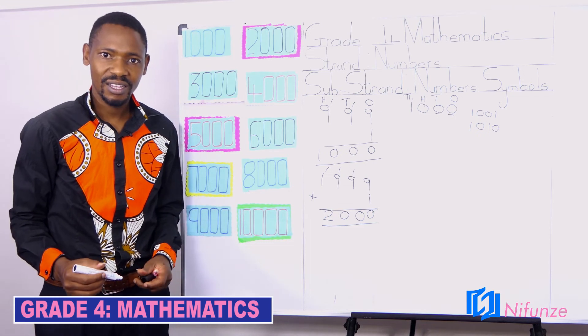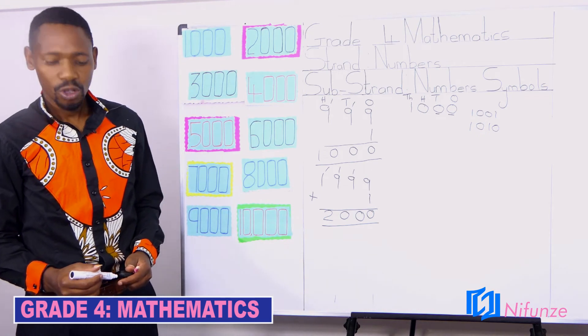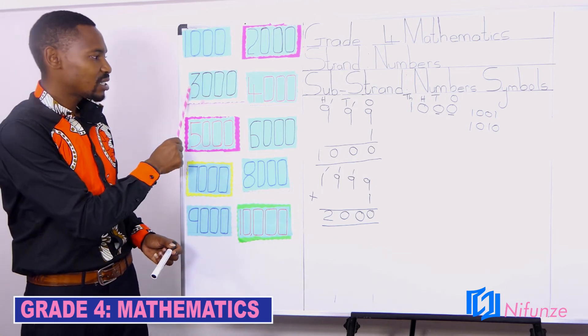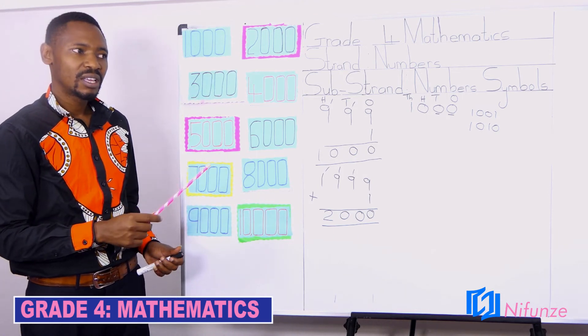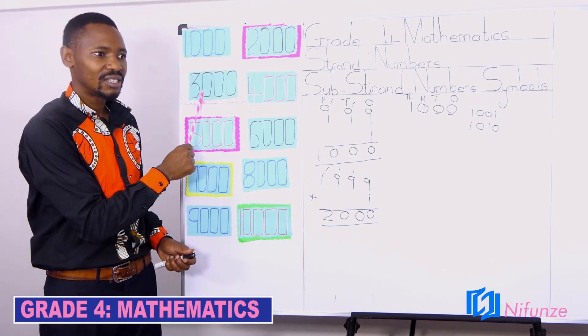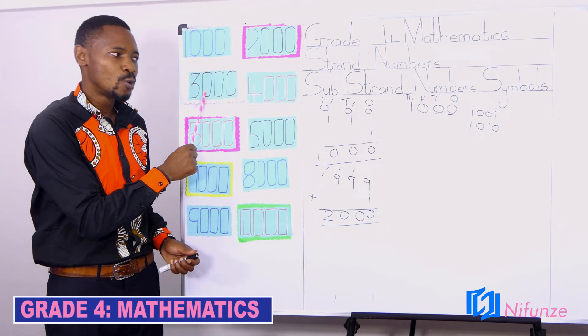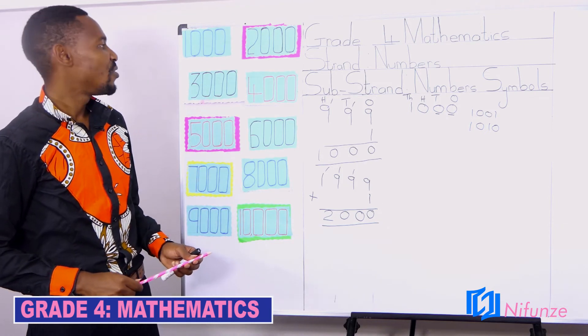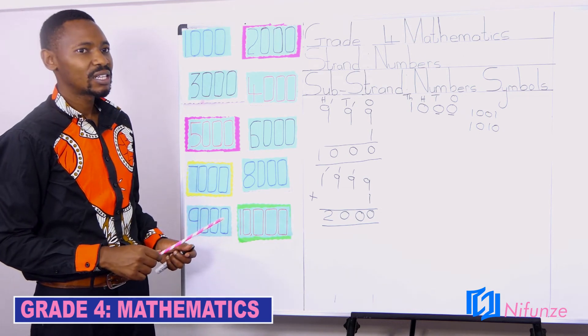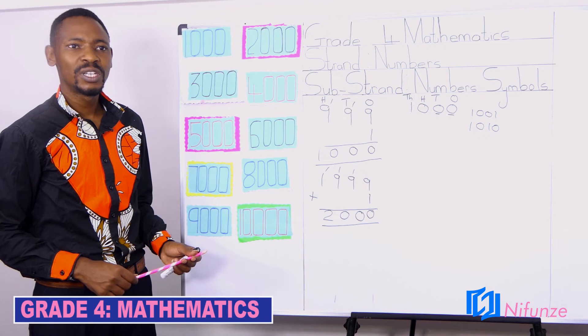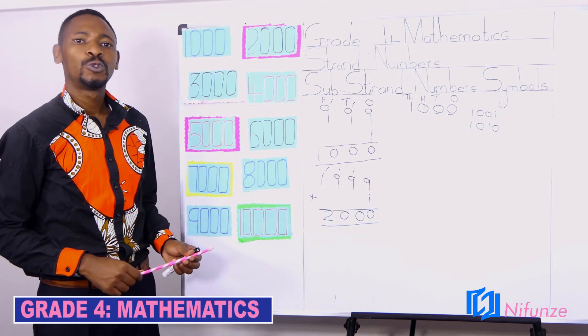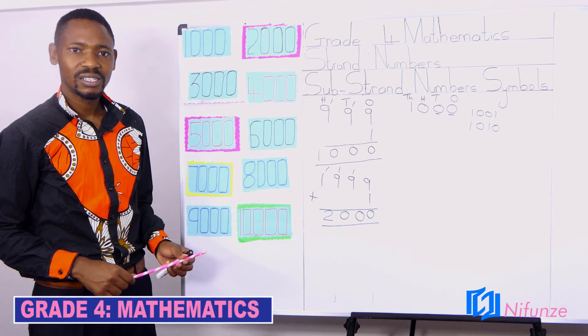Are we together? Good. So for you to get 3,000, which number comes before 3,000? Good. The number which comes before 3,000 is 2,999.